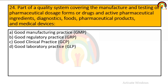The part of a quality system covering the manufacture and testing of pharmaceutical dosage forms, drugs, active pharmaceutical ingredients, diagnostics, food, pharmaceutical products, and medical devices is called GMP, GRP, GCP, or GLP? It is called Good Manufacturing Practice — GMP.